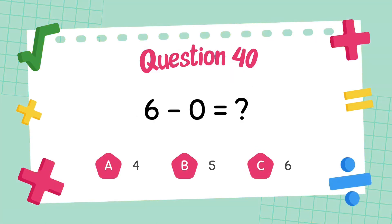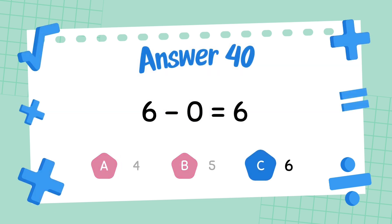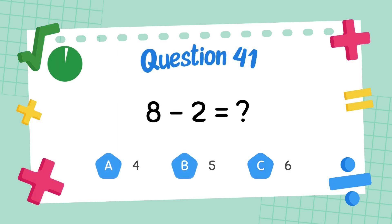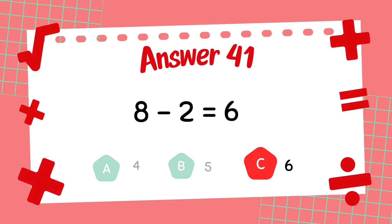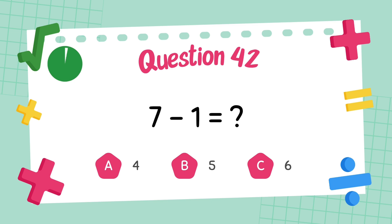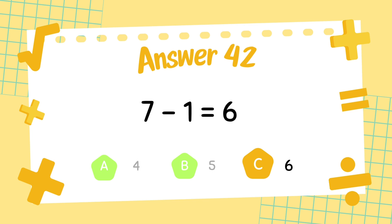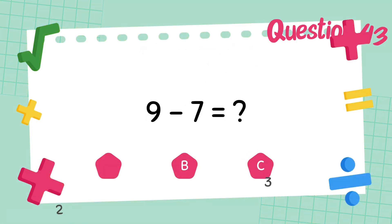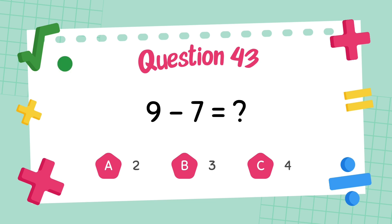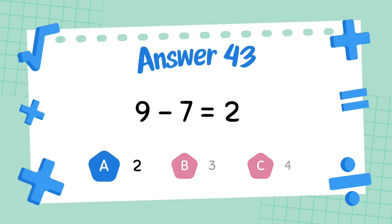What is 6 minus 2? The answer is 6. What is 9 minus 6? What is 7 minus 1? The answer is 6. What is 9 minus 7? The answer is 2.